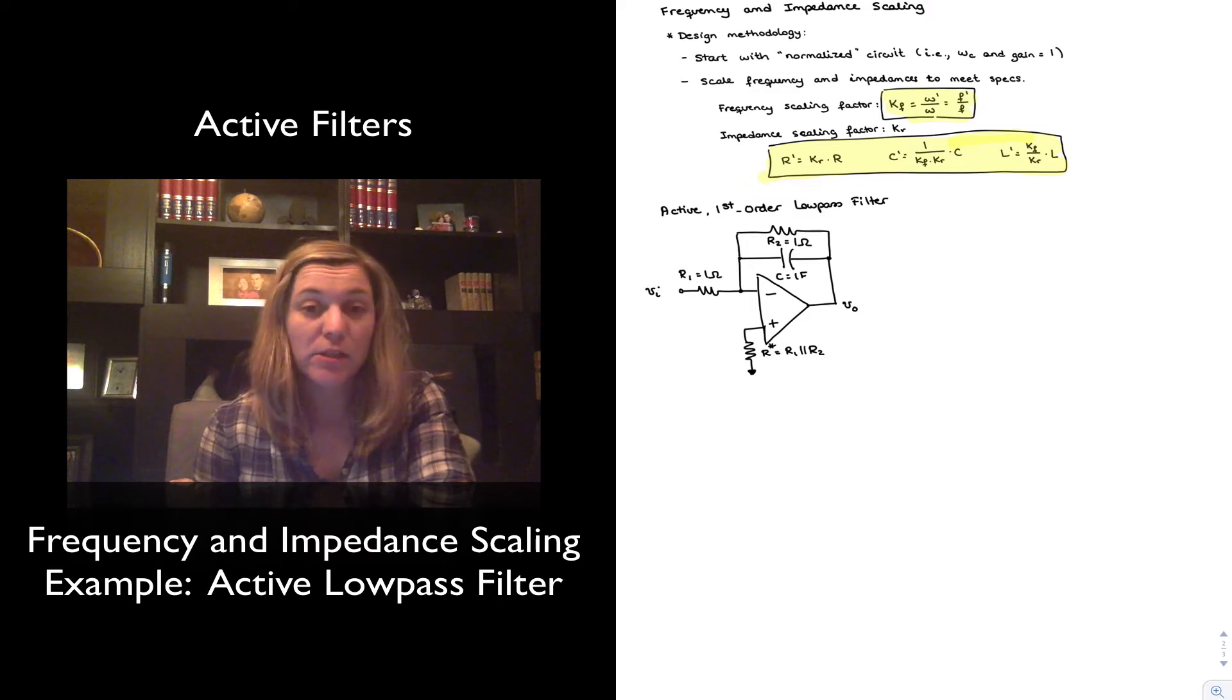And R star is simply a compensation resistor. It does not play a role into setting either the gain or the frequency response of the circuit. It's simply there for purposes of compensating the DC offset due to the input bias current.